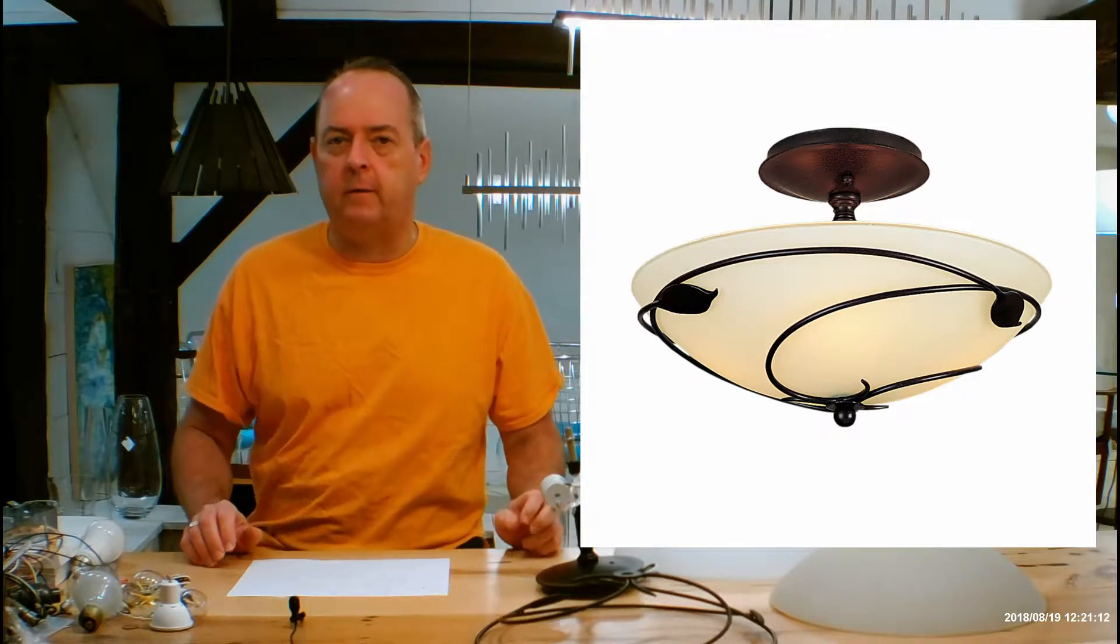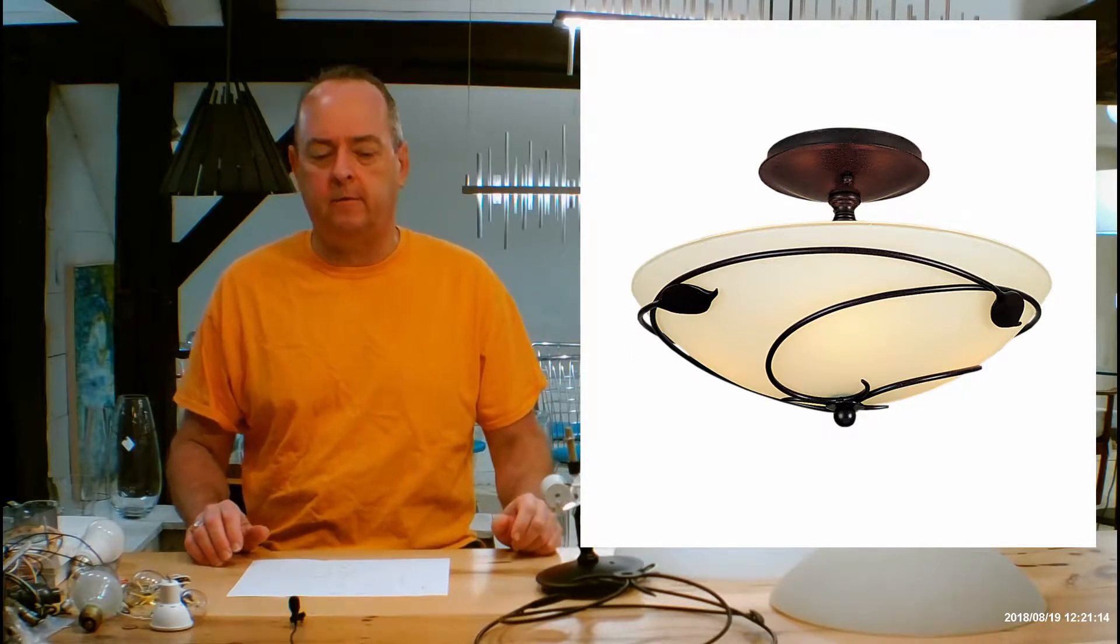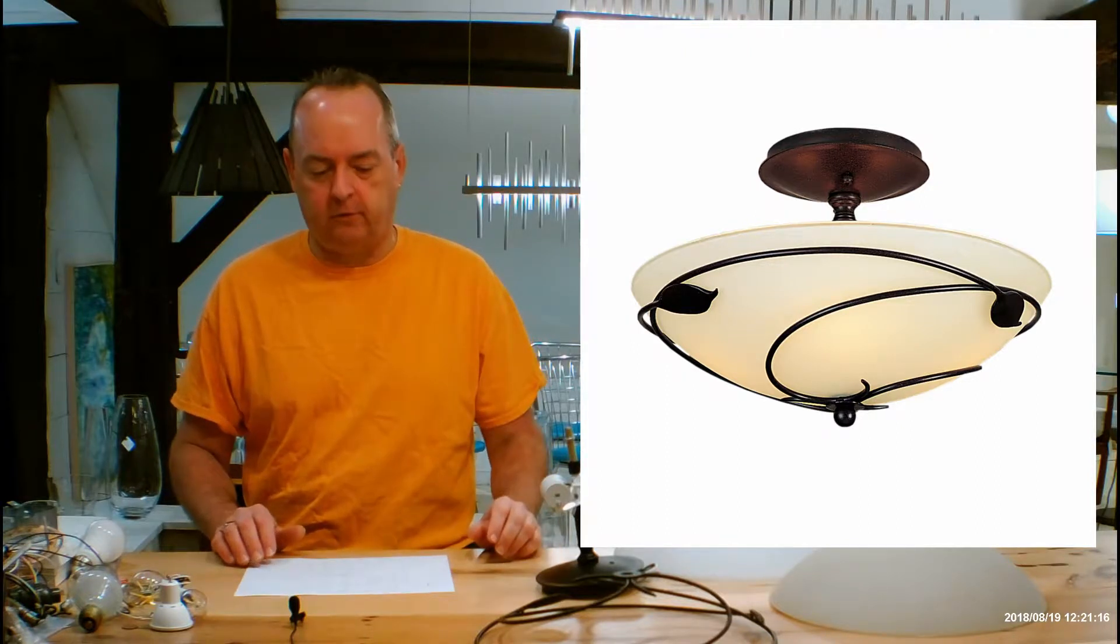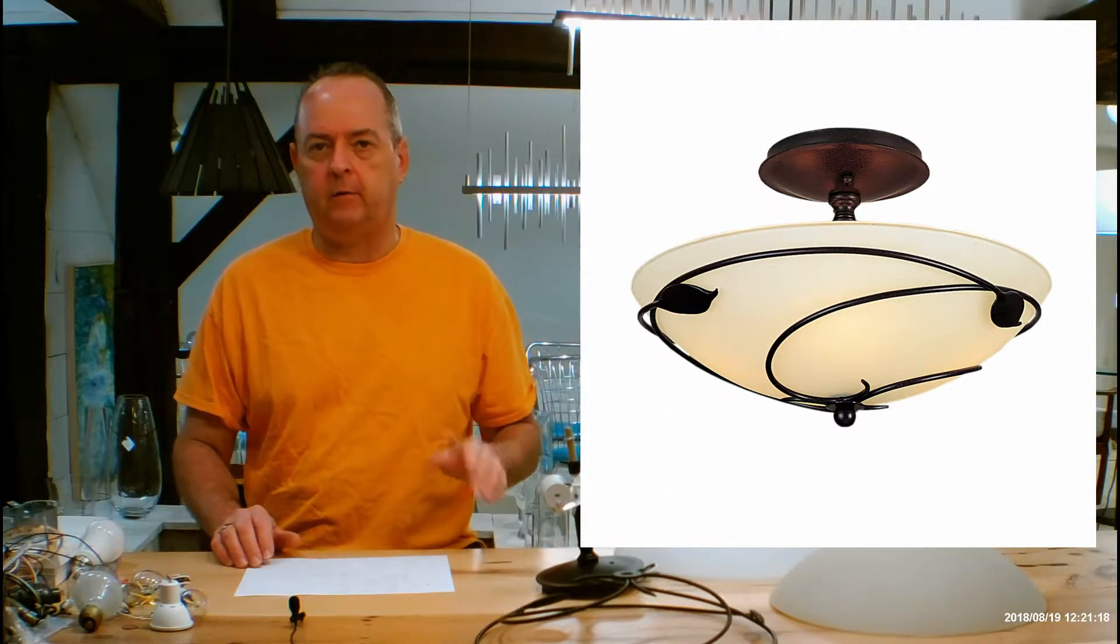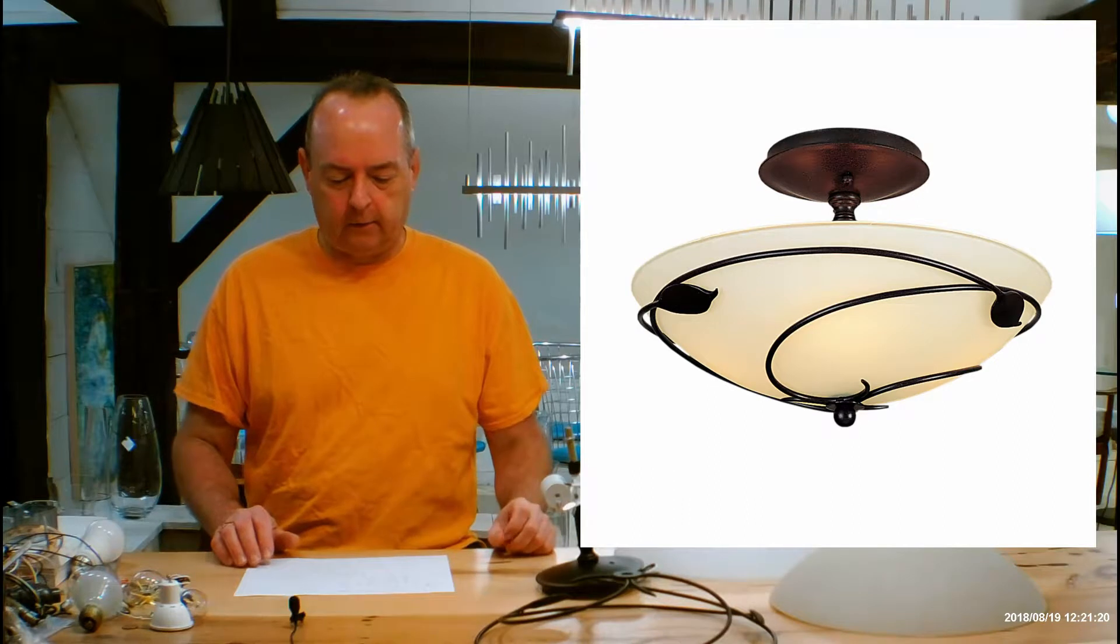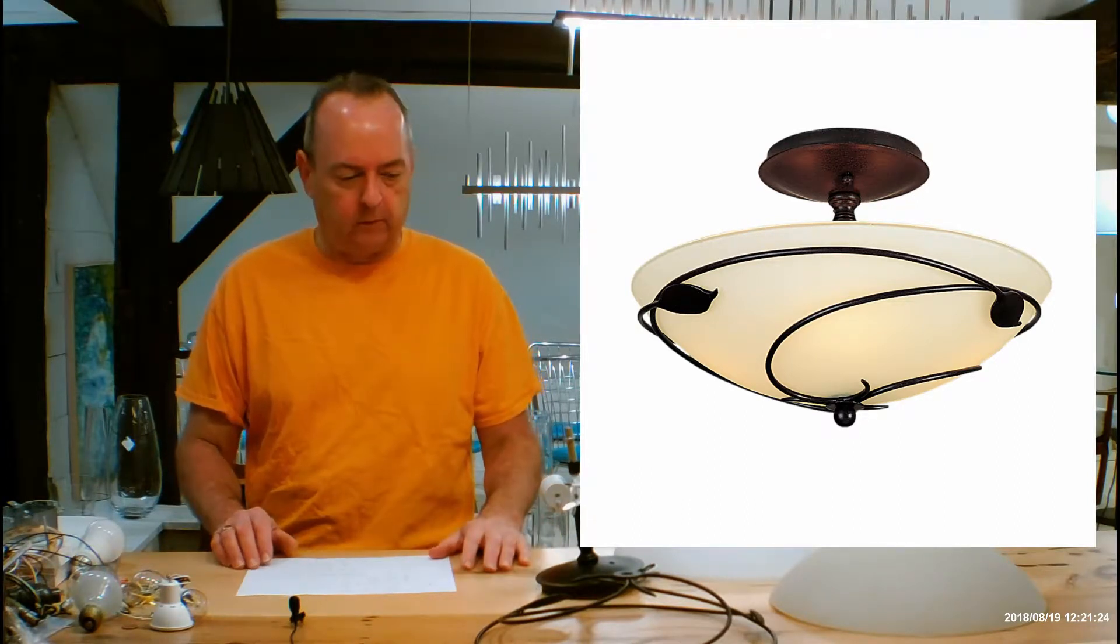Hi there, I'm Christopher Dunn again. This is handmadeinvermont.com, and today we're talking about the Hubberton Forge Semi-Flush Forged Leaf, and we're going to be talking about the Leaf Small, the 126712, and its big brother, the 126732.